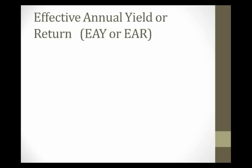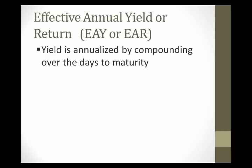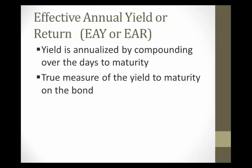Now, this yield to maturity that we calculate is, in fact, what's known as an effective annual yield, or an effective annual return. In other words, we annualized our yield by compounding over the days to maturity. And in this case, it's a fraction of a year, and we adjusted for that. And an effective annual yield, and compounding this way, gives us a true measure of the yield to maturity of this bond. A true measure of what our return is if we buy this bond and hold it until maturity under these conditions.